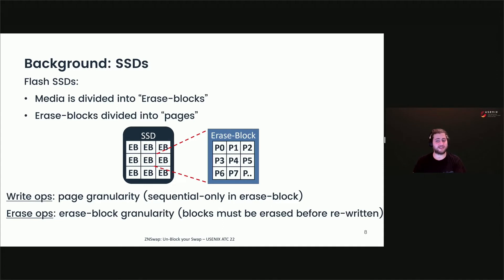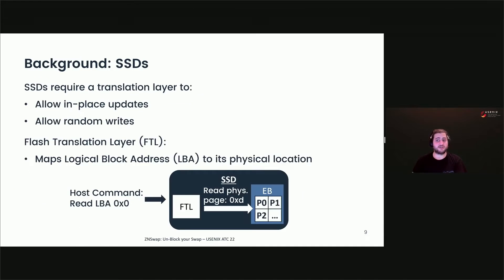Flash-based SSDs are divided into erase blocks. Each of these erase blocks are further divided into pages. Writes can be performed at page granularity and must be written sequentially within an erase block. Erase operations are performed at an erase block granularity, and pages cannot be overwritten. Therefore, to rewrite pages within an erase block, the whole block must be erased before being written to again. The constraints of flash media do not match the traditional block interface. In order to expose an interface that allows in-place updates and random writes, a flash translation layer, or FTL, within the SSD abstracts the complexities and limitations of the underlying media.